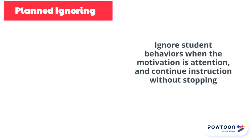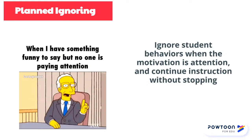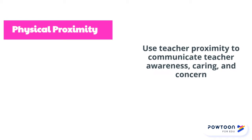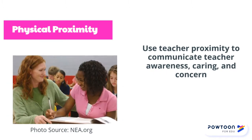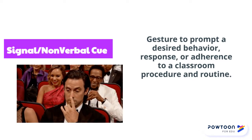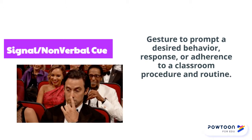Planned ignoring is when you ignore student behaviors when the motivation is attention, and just continue instruction without stopping. Physical proximity is when you use teacher proximity to communicate that you are aware, caring, and concerned. A signal or a nonverbal cue is usually pre-arranged, and it prompts a desired behavior, response, or adherence to a classroom procedure or routine.